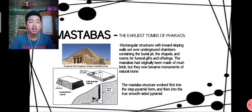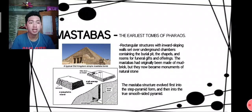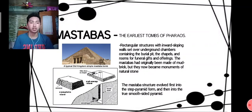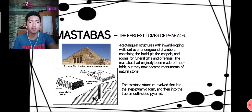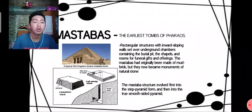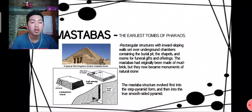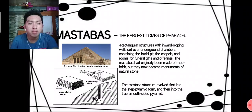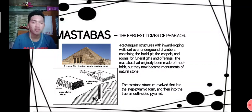Mastabas are the earliest tombs of pharaohs — rectangular structures with inward sloping walls set over underground chambers containing the burial pit, chapels, and rooms for funeral gifts and offerings. The mastabas had originally been made of mud brick but became monuments of natural stone. The mastaba structure evolved first into a step pyramid form and then into the true smooth-sided pyramid.